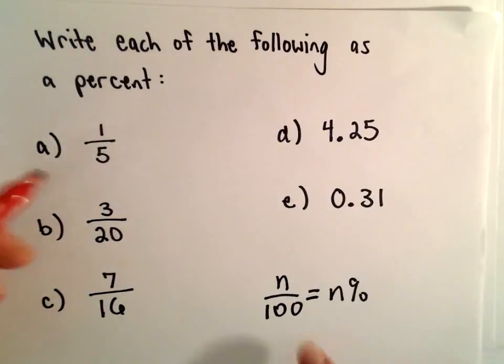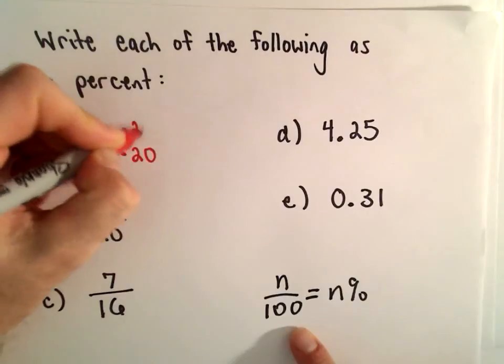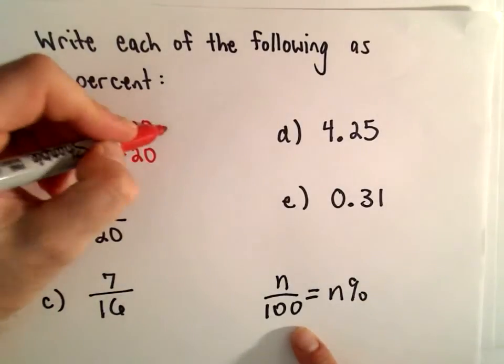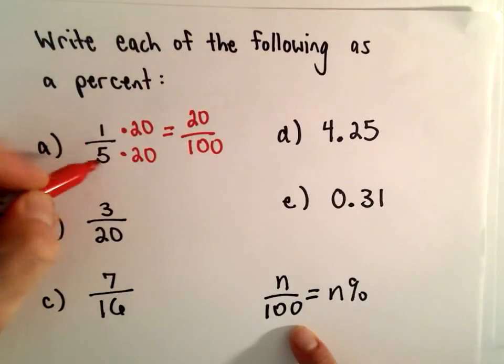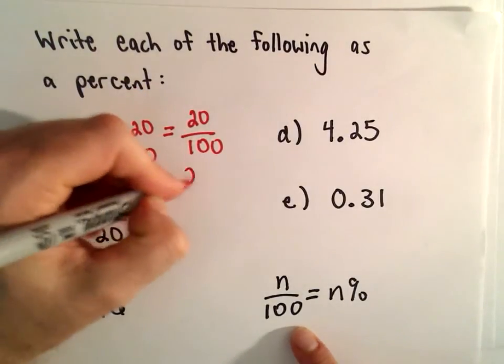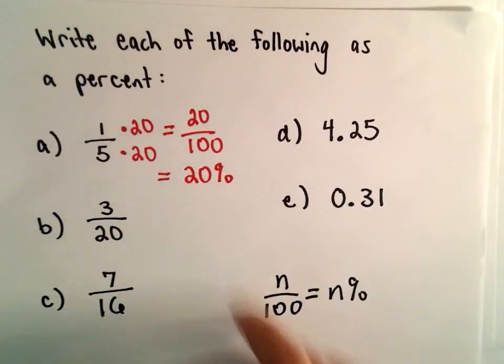So let's look at part A first. If I multiply the denominator by 20, and also the numerator by 20, I would get 20 over 100, and that would tell us that one fifth is the same thing as 20%. So again, when the denominator's 100, whatever's on top is going to be the percentage.